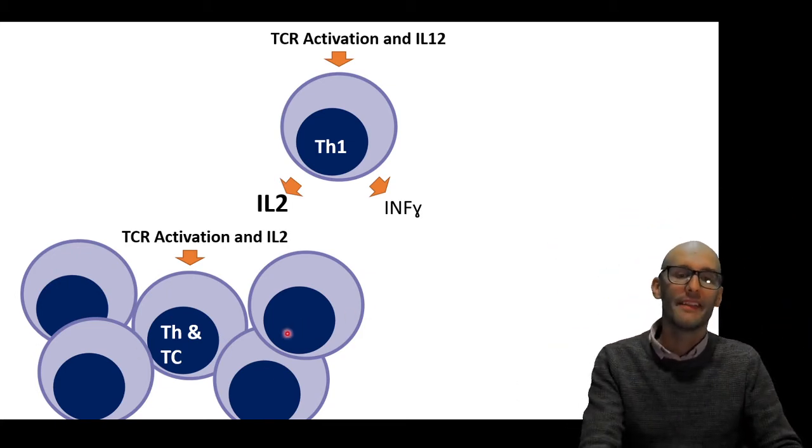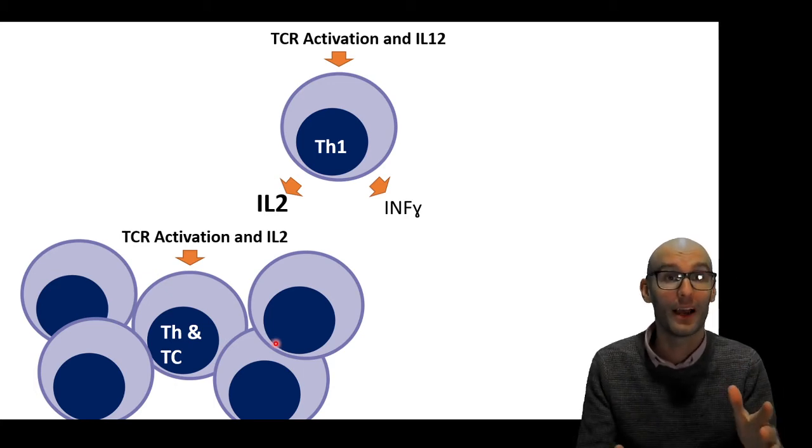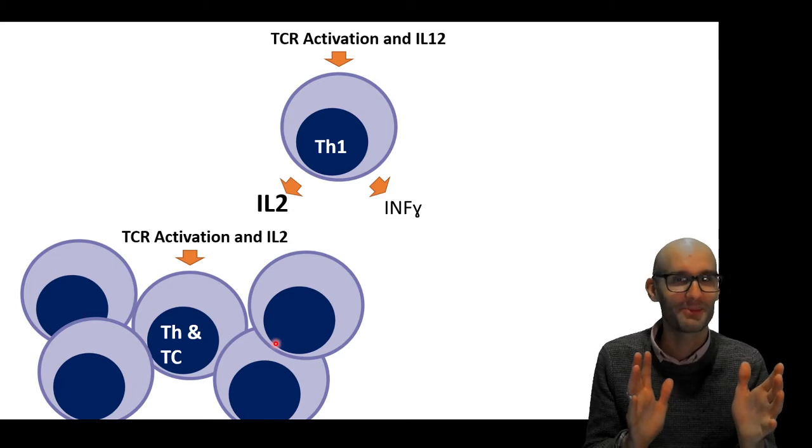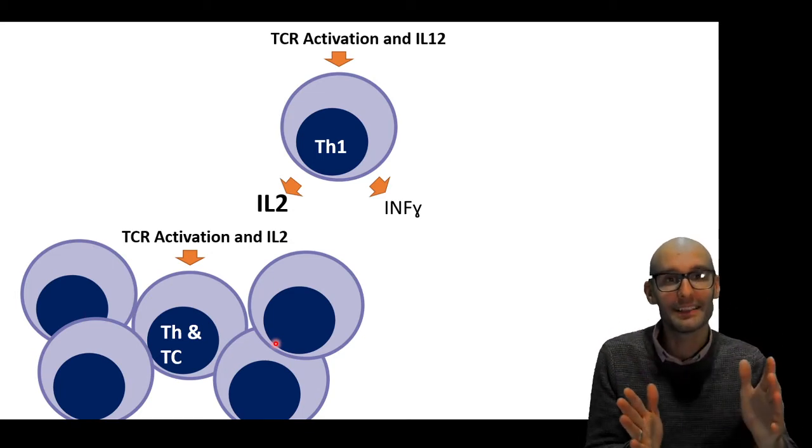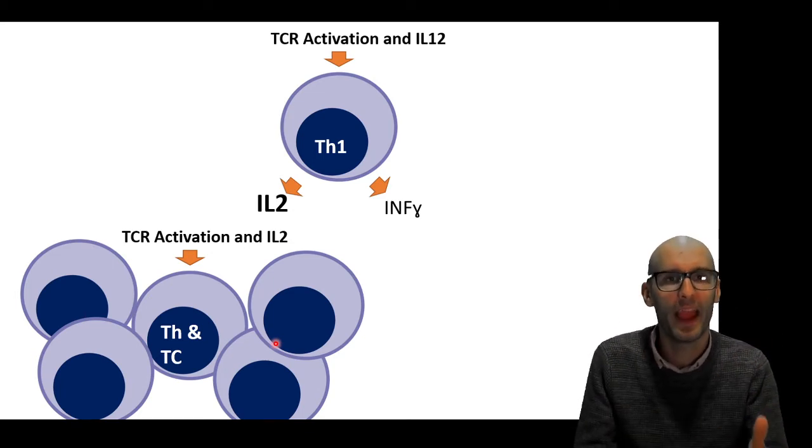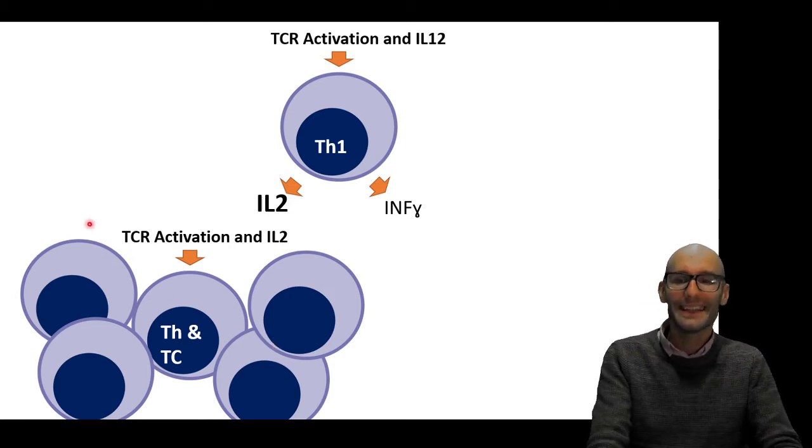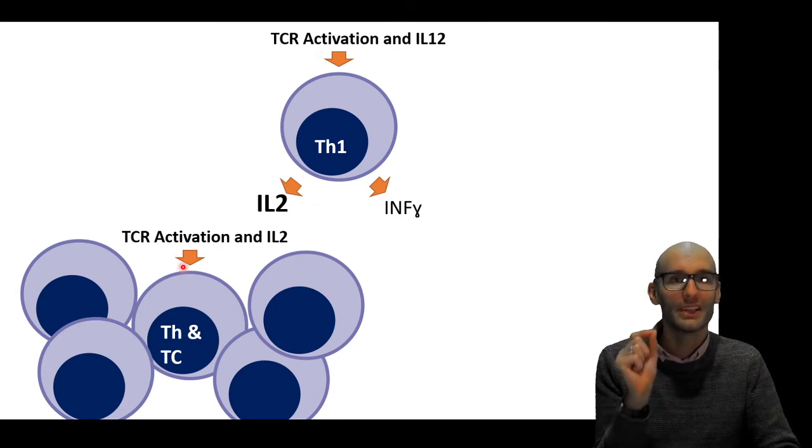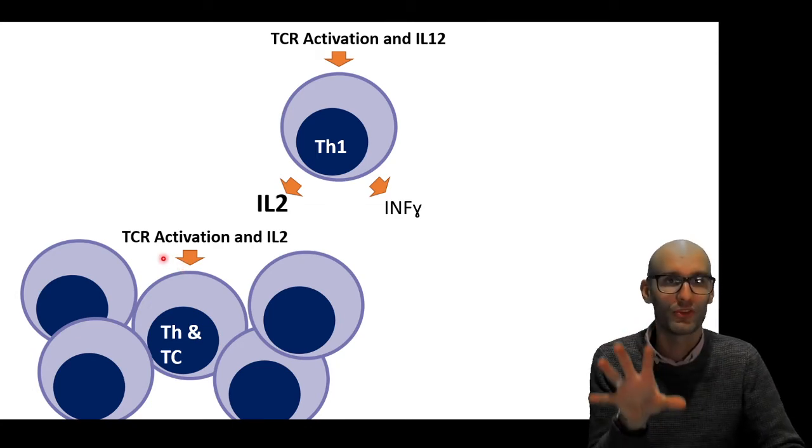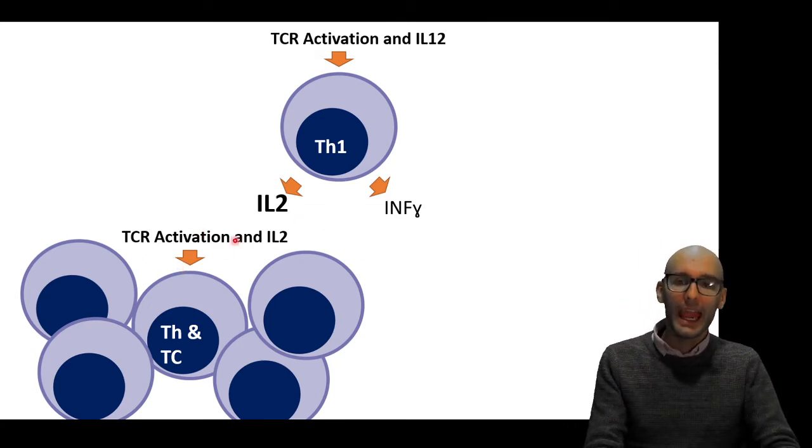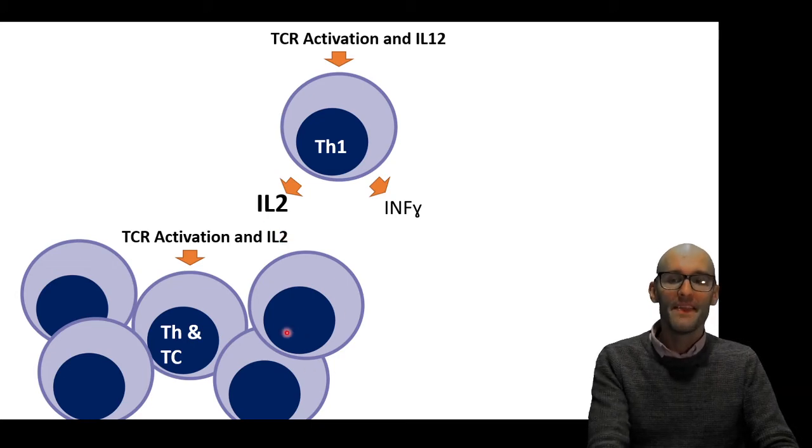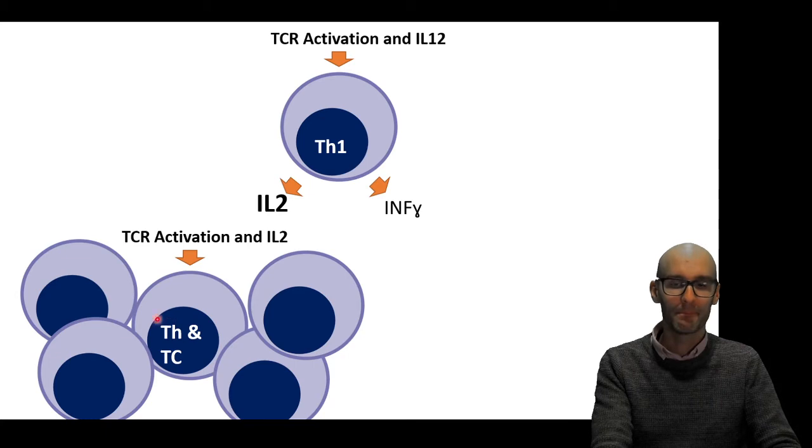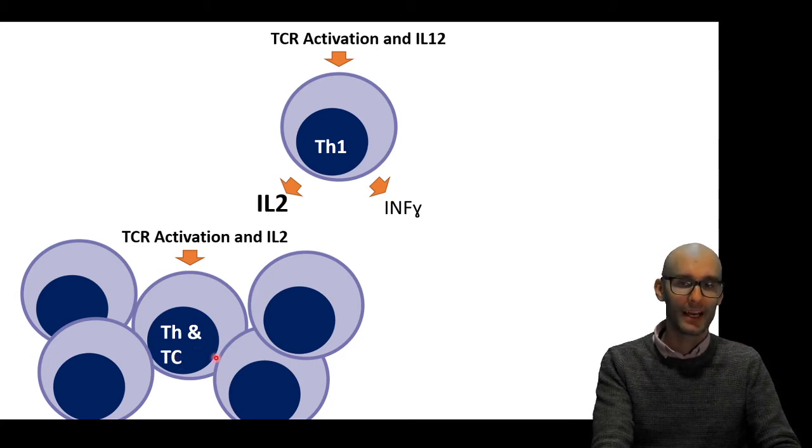We don't want the proliferation of a T cell that contains a T cell receptor that doesn't recognize the pathogen that we're being invaded with at the moment. So you need T cell receptor activation, which is a specific antigen response that only a few T cells will be able to respond to that one pathogen. And we need the IL-2 signal, and that will cause massive cell proliferation of the TH cells and the TC cells.